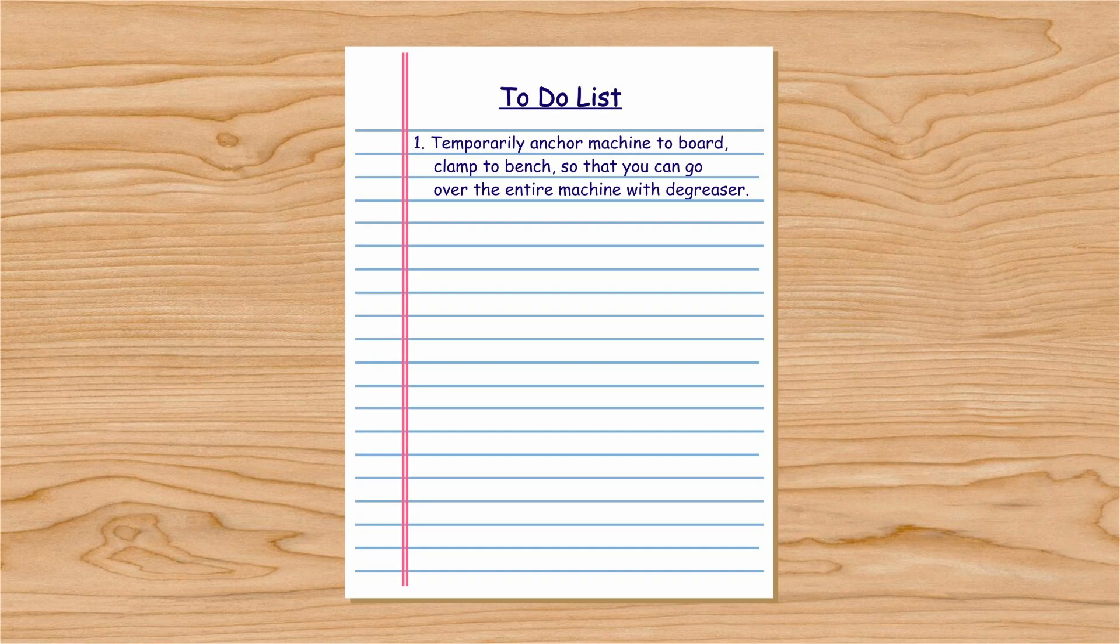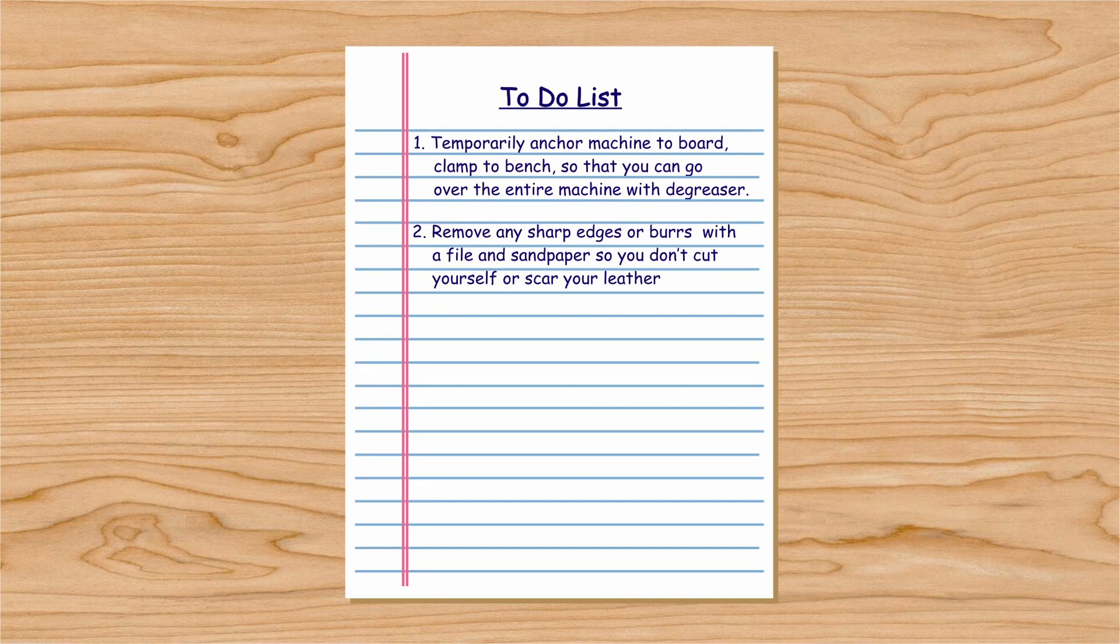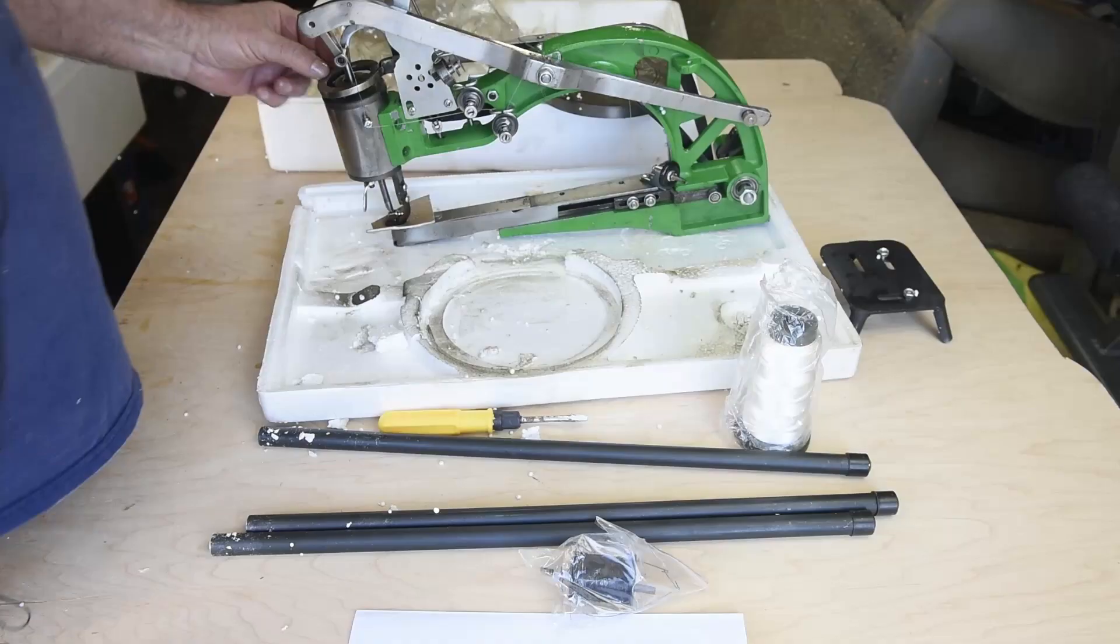I went over the entire machine with Mean Green and a rag, getting as much of the oil off as possible. You don't want oil stains on your leather so you need to go over it maybe once or twice. Also at this time look for any sharp edges or burrs that could cut you or scar your leather. Take a file or sandpaper to these areas to get them smooth.